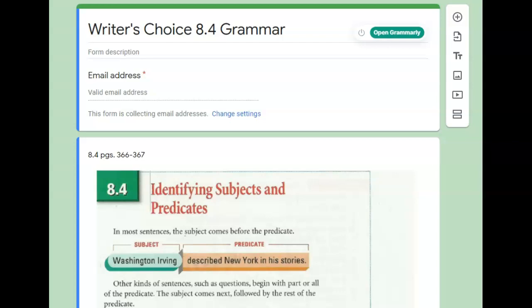This is a video for Writer's Choice 8.4 Grammar. The assignments that would come before this one would be 8.3 Grammar and Quill Sets 2 and 3. If you have not finished those, I would recommend to go back and do those first so you're not lost.